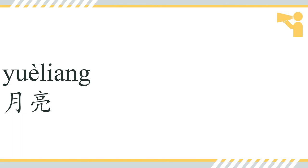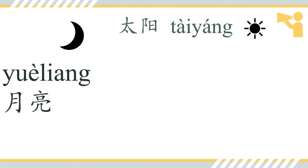月亮 refers to the moon. And how about the sun? 太阳. The character 月 also means 'month', so we have 二月 — February, the second month of the year — and 一个月, meaning one month.